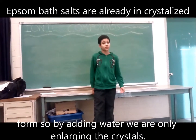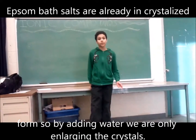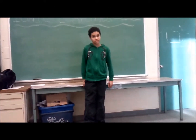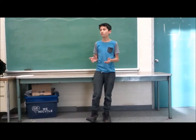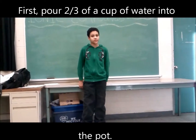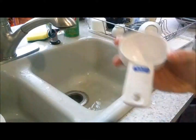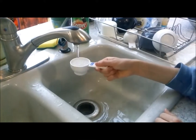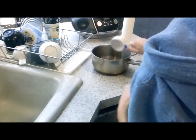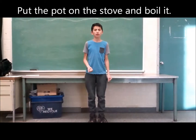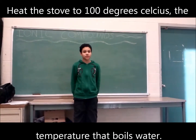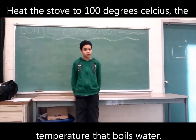Epsom salts are already in crystalline form, so if I add water, the crystals will enlarge. While doing the experiment, make sure to wear proper eye protection and gloves. First, pour two-thirds of a cup of water into the pot. Put the pot on the stove and boil it. We heat the stove up to 100 degrees Celsius, the temperature at which water boils.